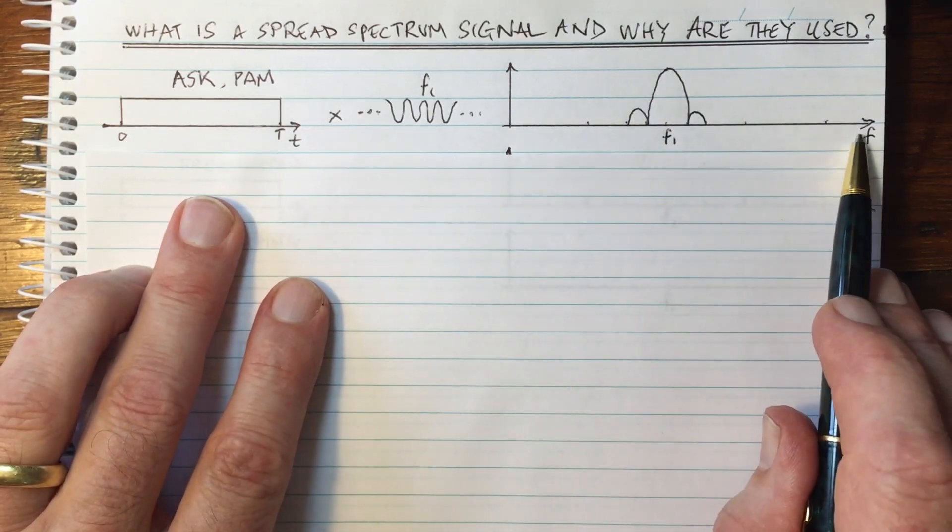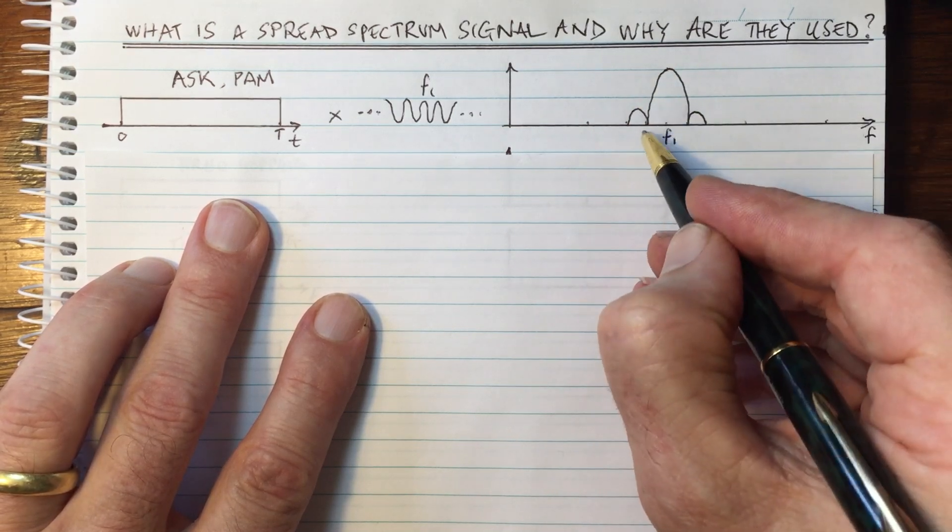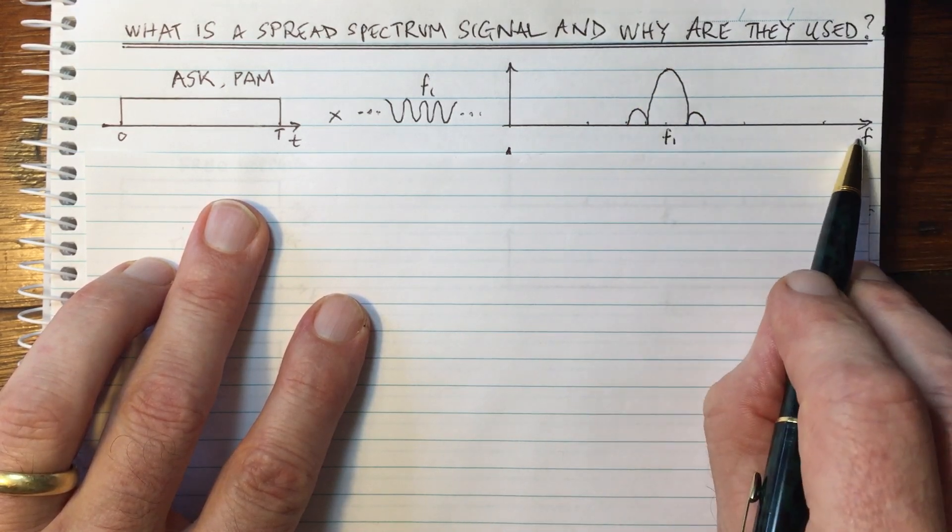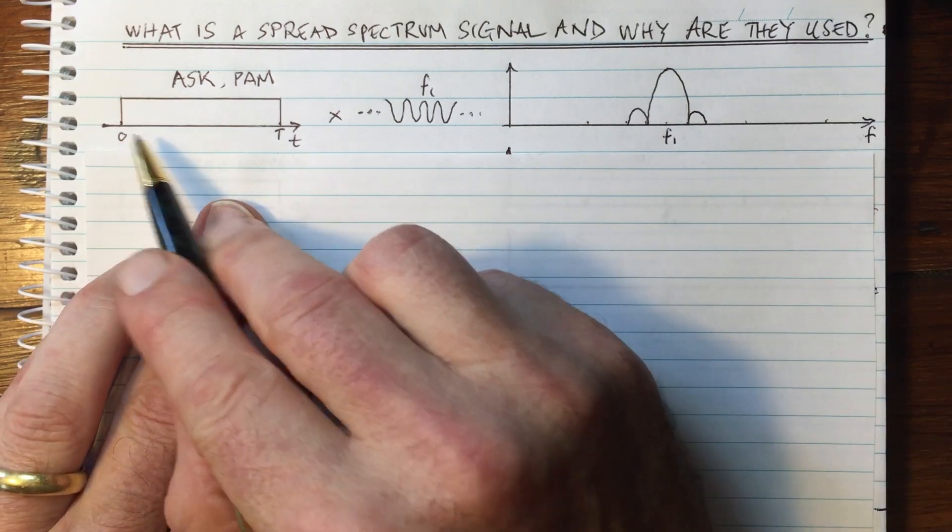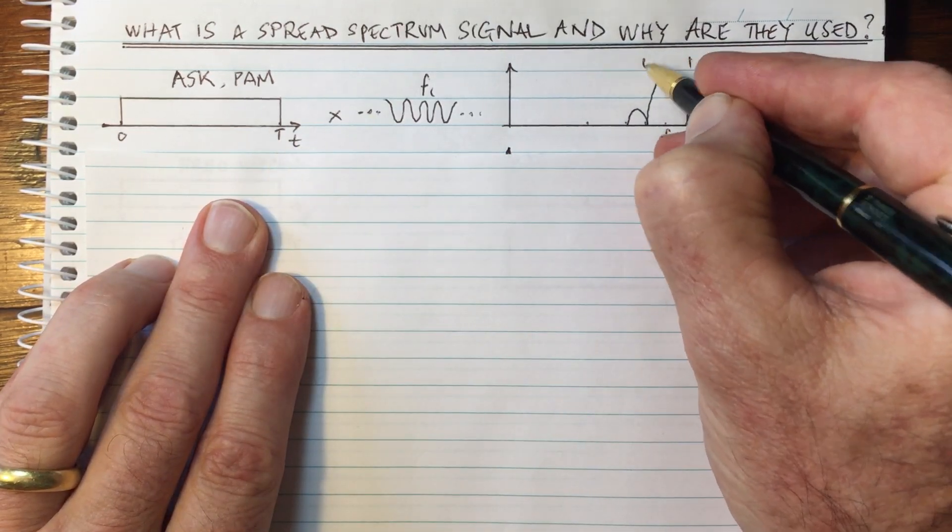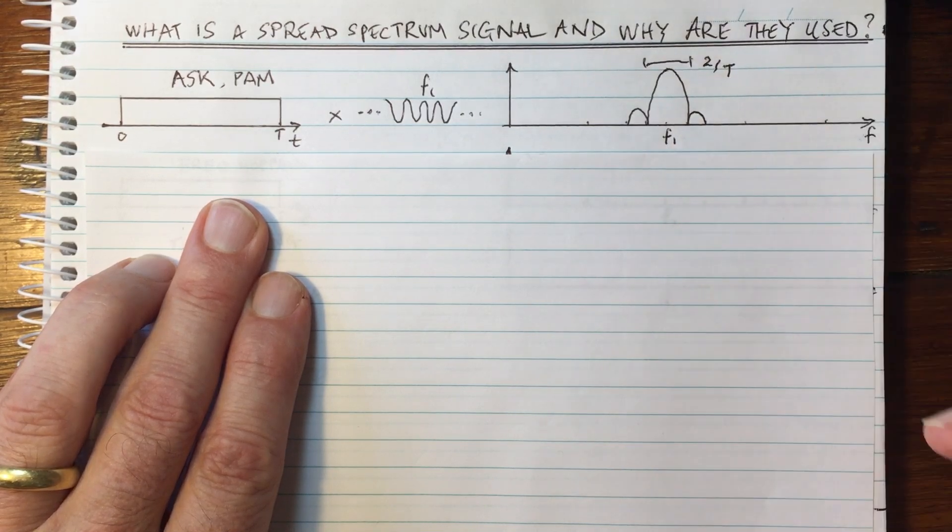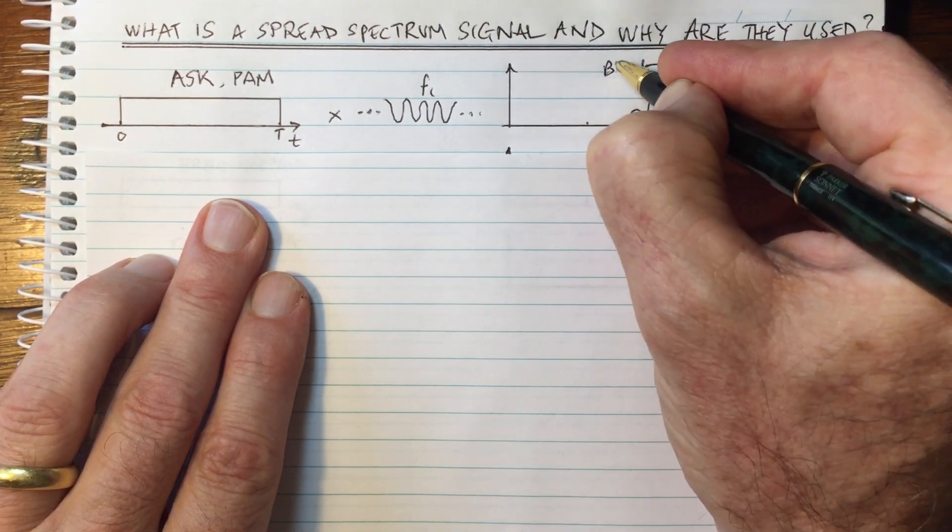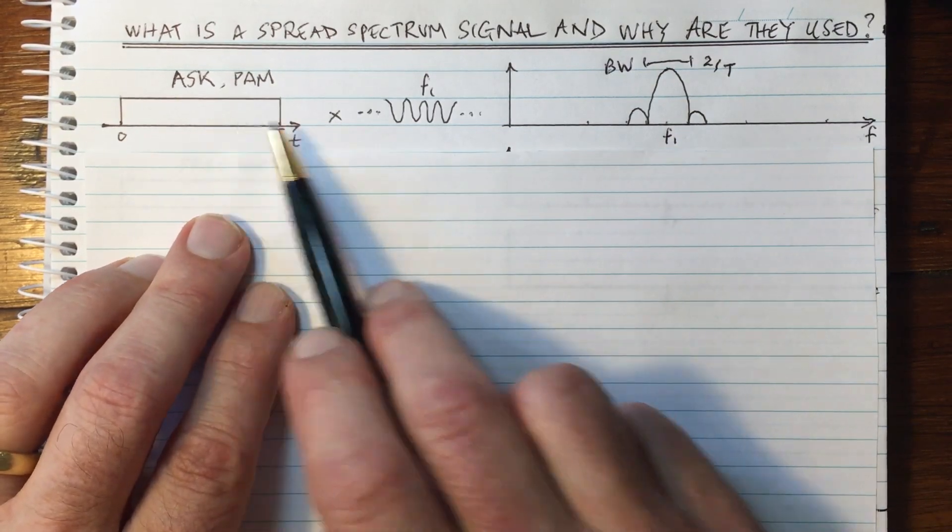And so this is what it looks like in the frequency domain. And the bandwidth across here, if we take it from the frequency band between these two zeros here, then this is going for capital T. That bandwidth there is 2 divided by T. That's the amount of bandwidth that we are using to send this signal. Okay, so this is a standard signal.